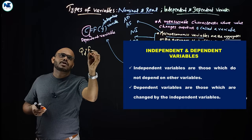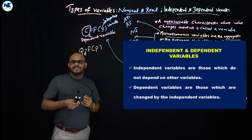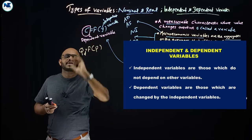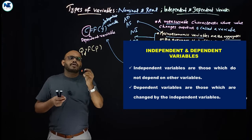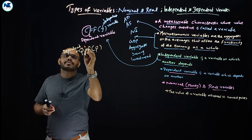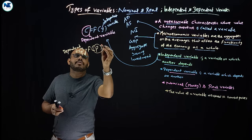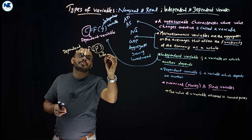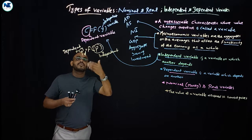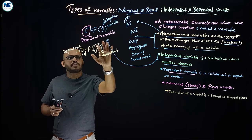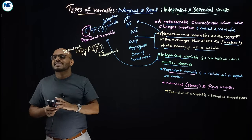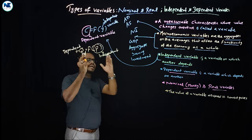Another example: quantity demanded is a function of price. Here, quantity demanded is the dependent variable — it depends upon the price level P, which is the independent variable. According to the law of demand, there is an inverse relationship between quantity demanded and the price of a commodity. So P is the independent variable and quantity demanded is the dependent variable.